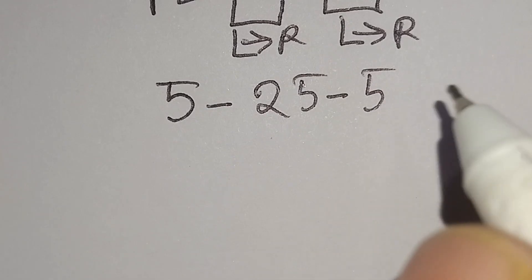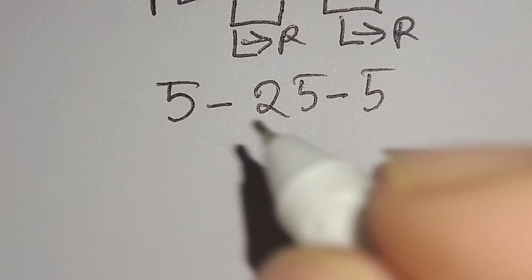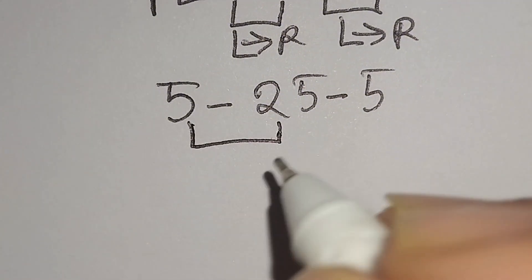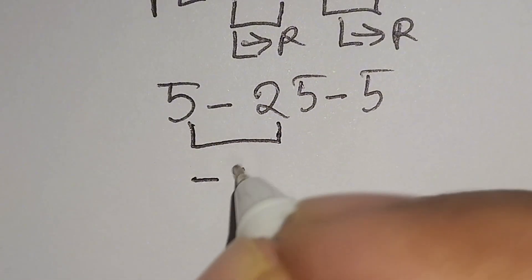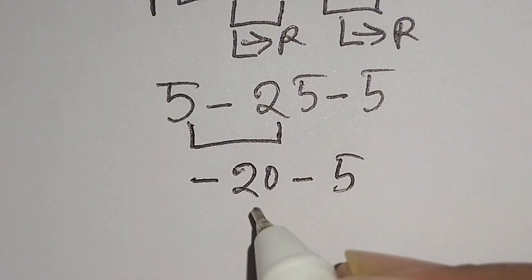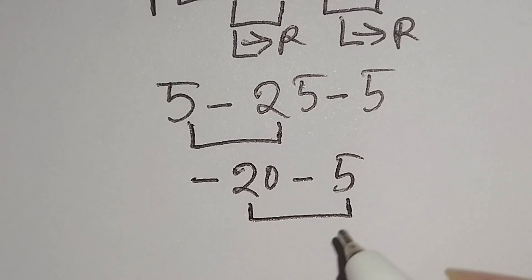When we have more than one subtraction, we have to work left to right. Therefore, here 5 minus 25 gives us negative 20 minus this 5. Negative 20 minus 5 gives us negative 25.